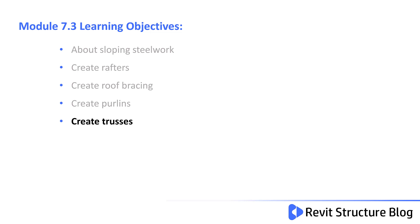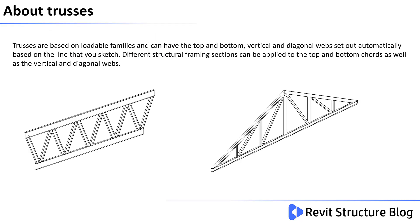In this module we take a look at the process of creating trusses. Trusses are based on loadable families and can have the top and bottom vertical and diagonal webs set out automatically based on the line that you sketch. Different structural framing sections can then be applied to the top and bottom chords as well as the vertical and diagonal webs.